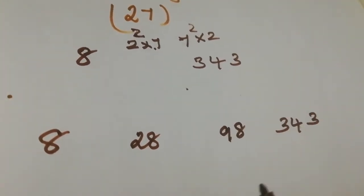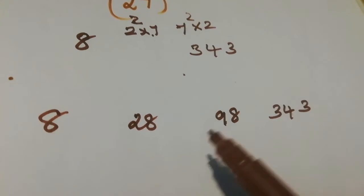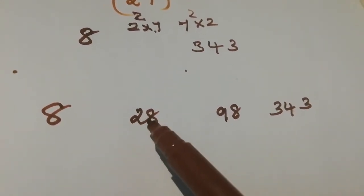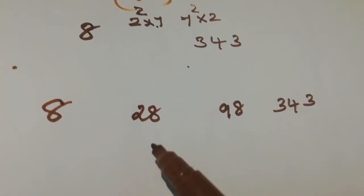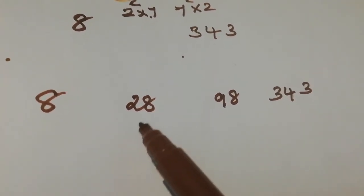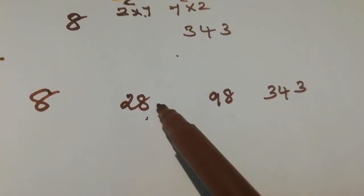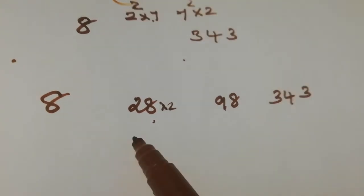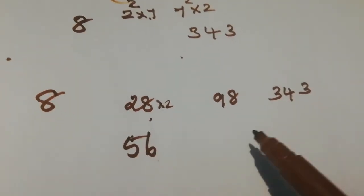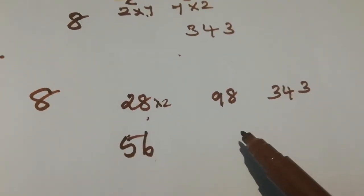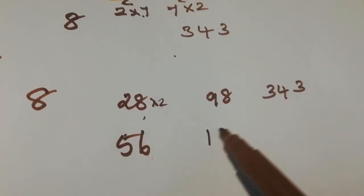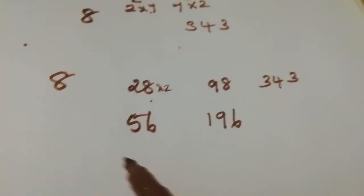The next step is to multiply 28 by 2 and 98 by 2. So 28 multiplied by 2 is 56, and 98 multiplied by 2 is 196.